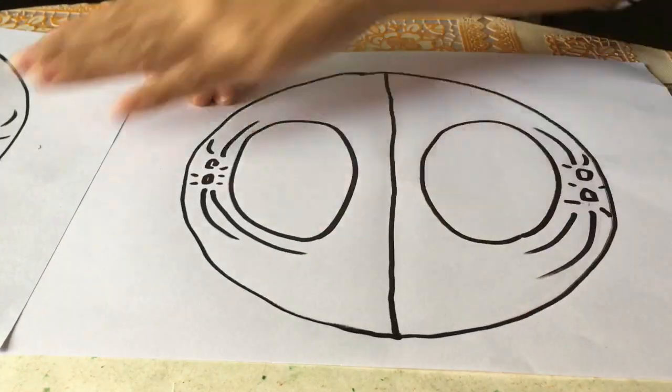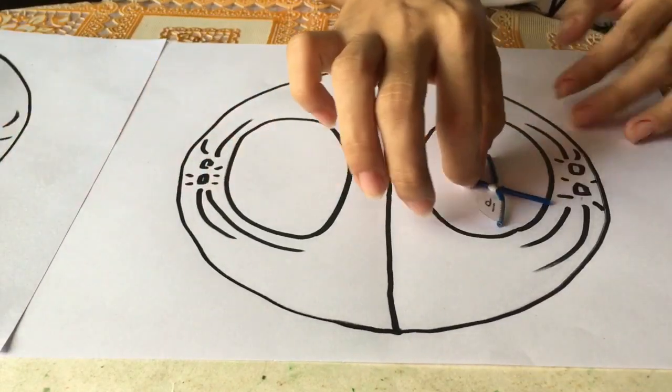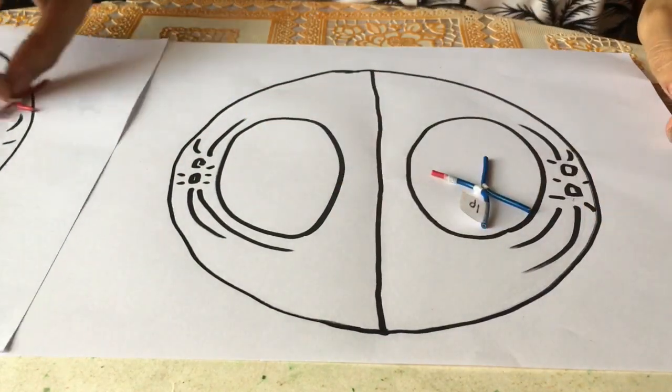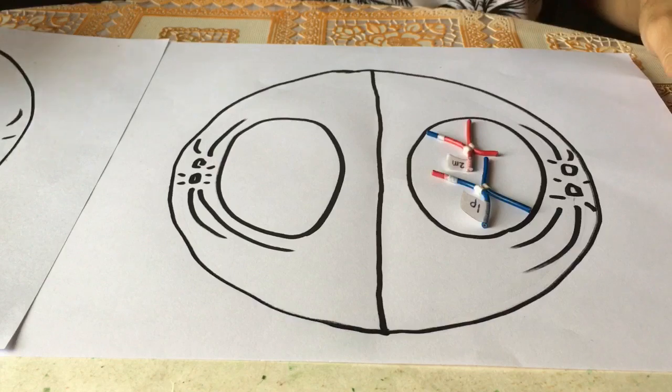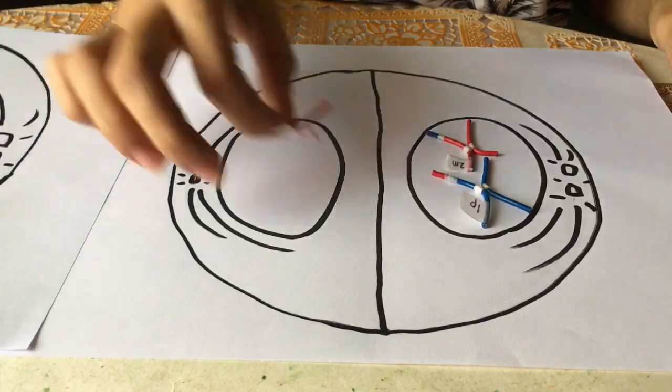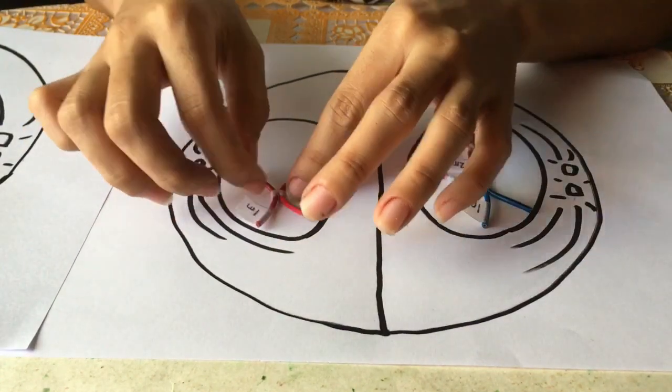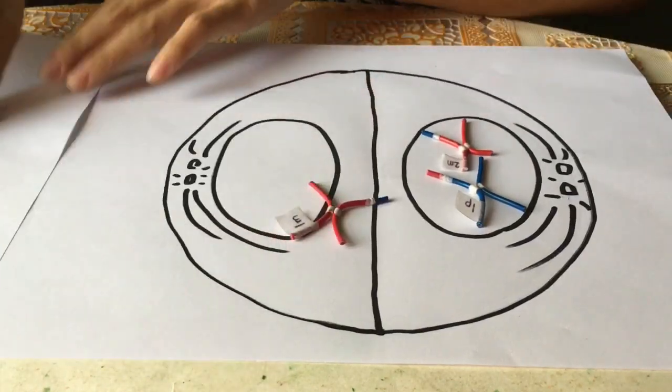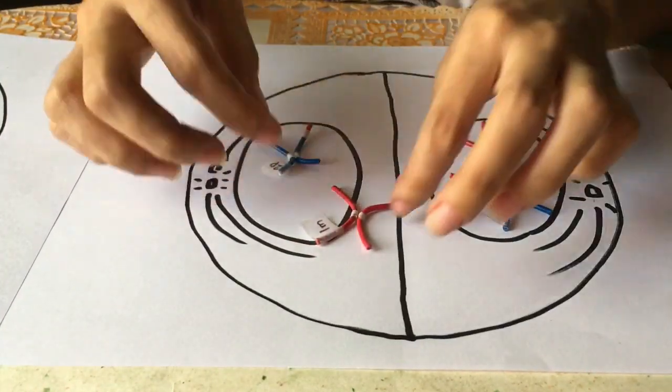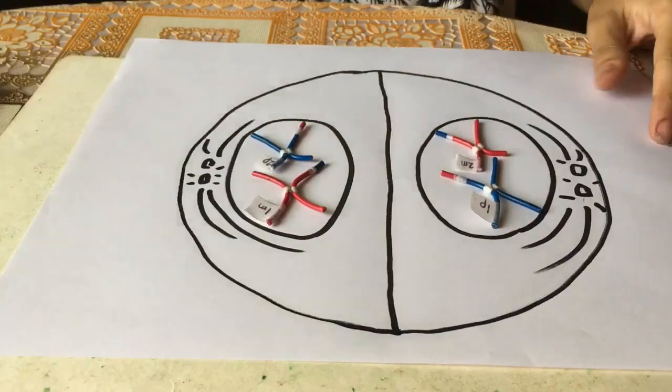In metaphase I, the chromosomes complete their move to the opposite poles of the cell. A membrane forms around each set of chromosomes to create two new nuclei. The single cell then pinches in the middle to form two separate daughter cells, each containing a full set of chromosomes within a nucleus. This process is known as cytokinesis.